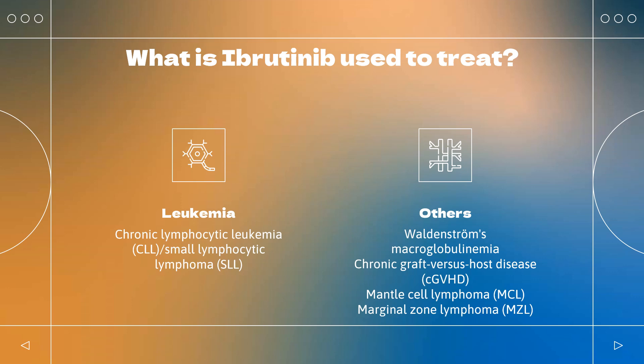Waldenström's Macroglobulinemia: Ibrutinib is used alone or with rituximab. In Europe, it is approved for patients who have received at least one prior therapy, or in first-line treatment for patients unsuitable for chemoimmunotherapy.